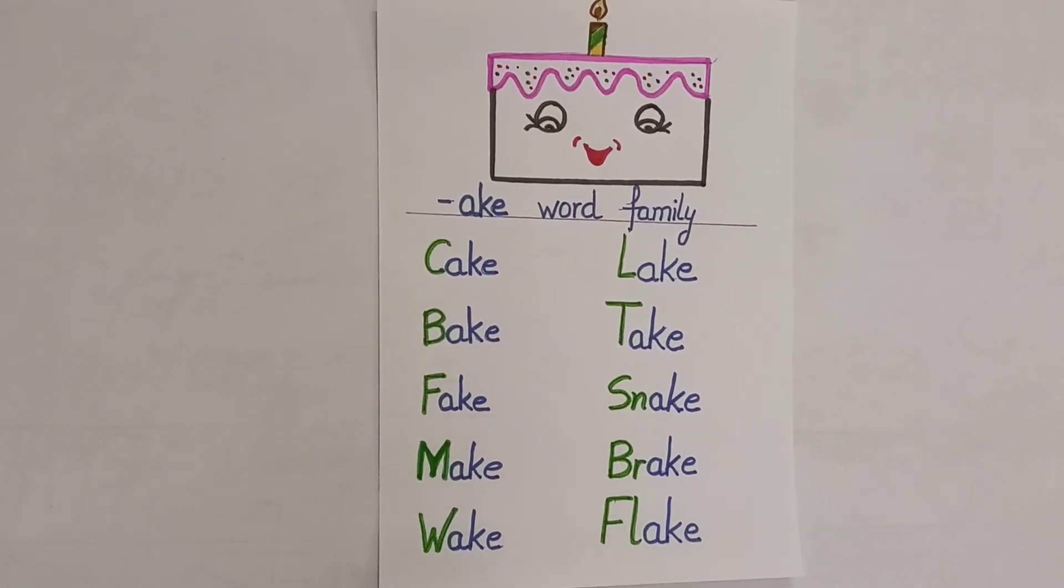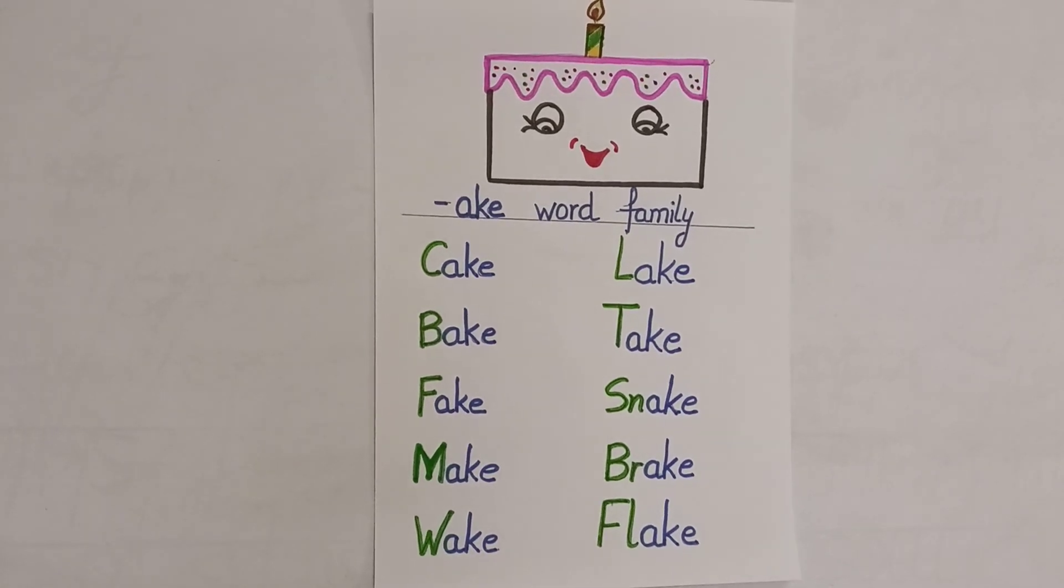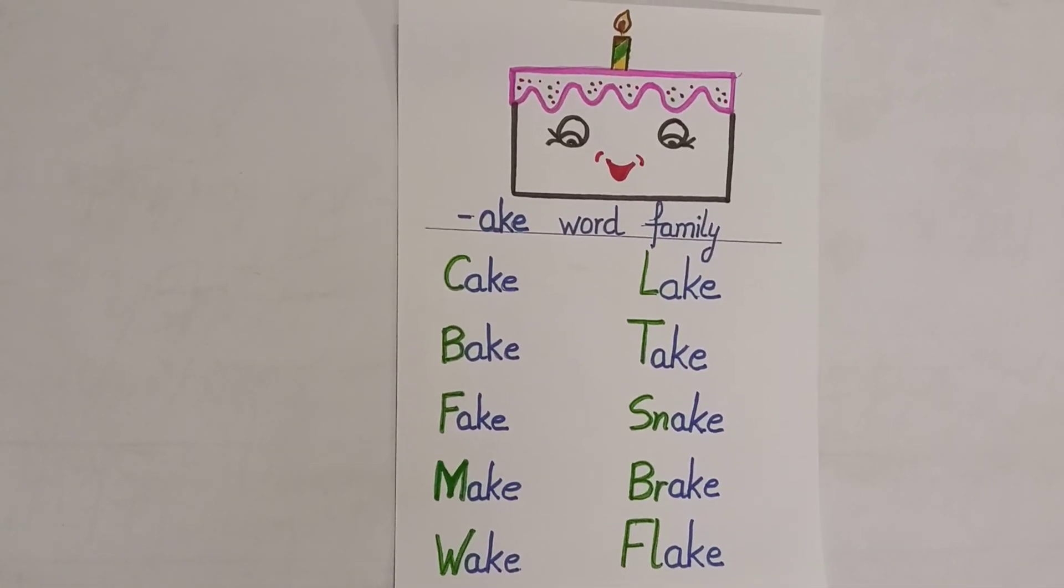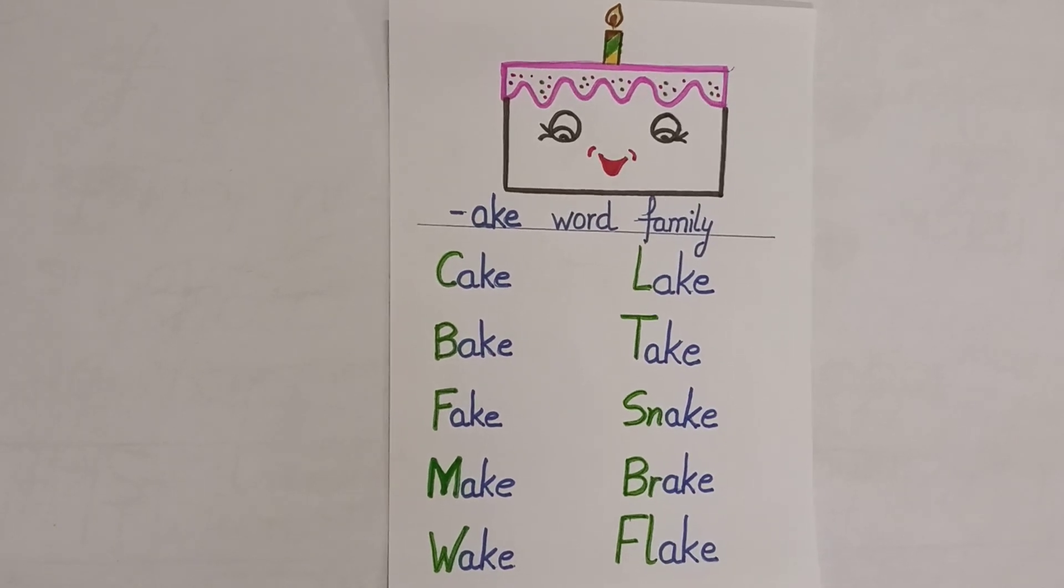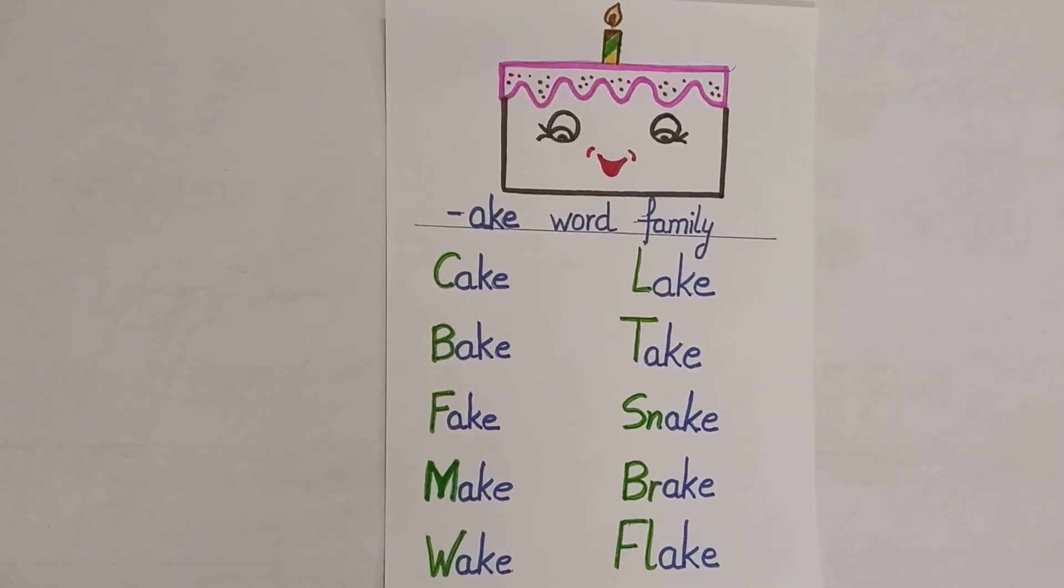You can give this to your children and ask them to repeat it after you three to four times, so that the concept of the -ake word family will be clear for them. Okay, bye!